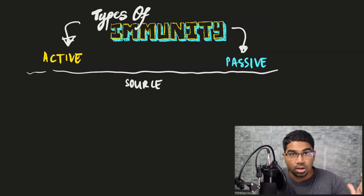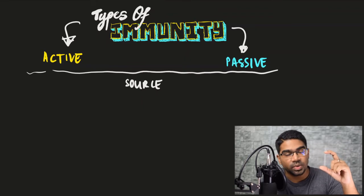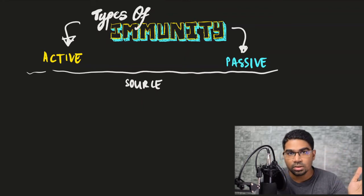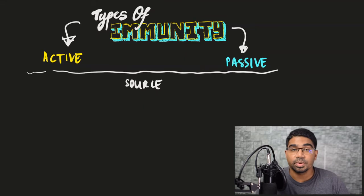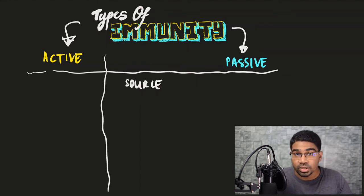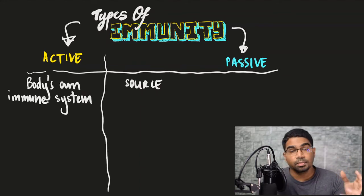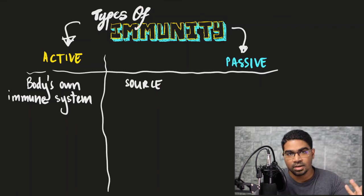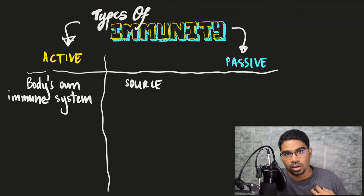The source of these antibodies determines whether it is active immunity or passive immunity. If these antibodies are produced by our own body — that means by the body's own immune system — then it would be categorized under active immunity. Pathogens are microorganisms that cause disease.